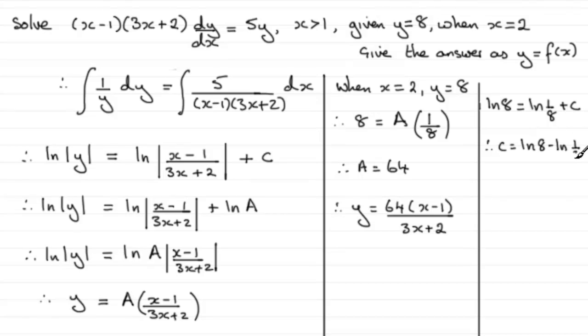So I get c = ln(8 ÷ 1/8), and 8 divided by 1/8 is 64, so you end up with c = ln(64). So hopefully you can see where this is going - you can see that c then becomes the natural log of our A value, A being 64.